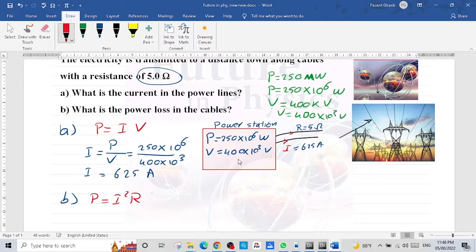Why we don't use V? Because V is inside the power station. But outside, this is the current produced. So the current produced from the power station, 625 squared, multiply the resistance of the cables, which is 5. When we use the calculator, it becomes 1.95.